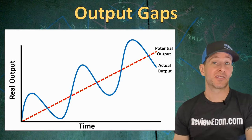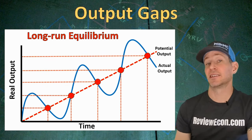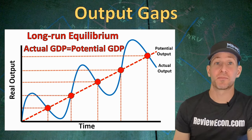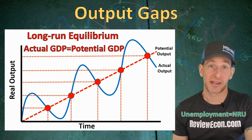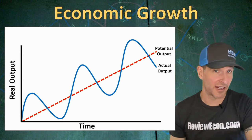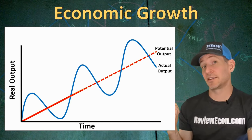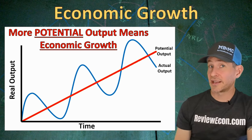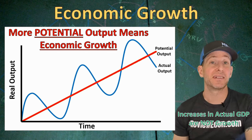When actual output is on the trend line of potential real output, the economy is in long-run equilibrium — actual GDP equals potential GDP, and the actual unemployment rate equals the natural rate of unemployment. Remember, one of our economic goals is economic growth, which means the long-run potential increases over time. Importantly, increases in actual GDP are not economic growth — only increases in potential real GDP count as economic growth.